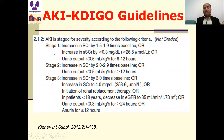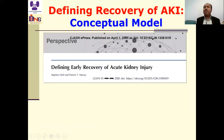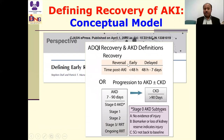Regarding recovery: according to this proposal, AKI may recover early within 48 hours, or delayed between 2 to 7 days, or progress from 7 to 90 days — in this time range we say acute kidney disease. If it persists beyond 90 days, we are in chronic kidney disease.